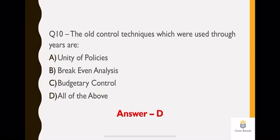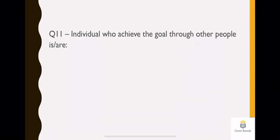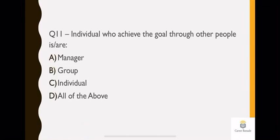Question 11: an individual who achieves the goal through other people. This is very simple. An individual who achieves a goal through the help of others, what do we call them? You have options: manager, group, individual, or all of the above. Definitely it is very easy. The answer is A, manager. A manager is someone who will get his work done through other people, through his team.